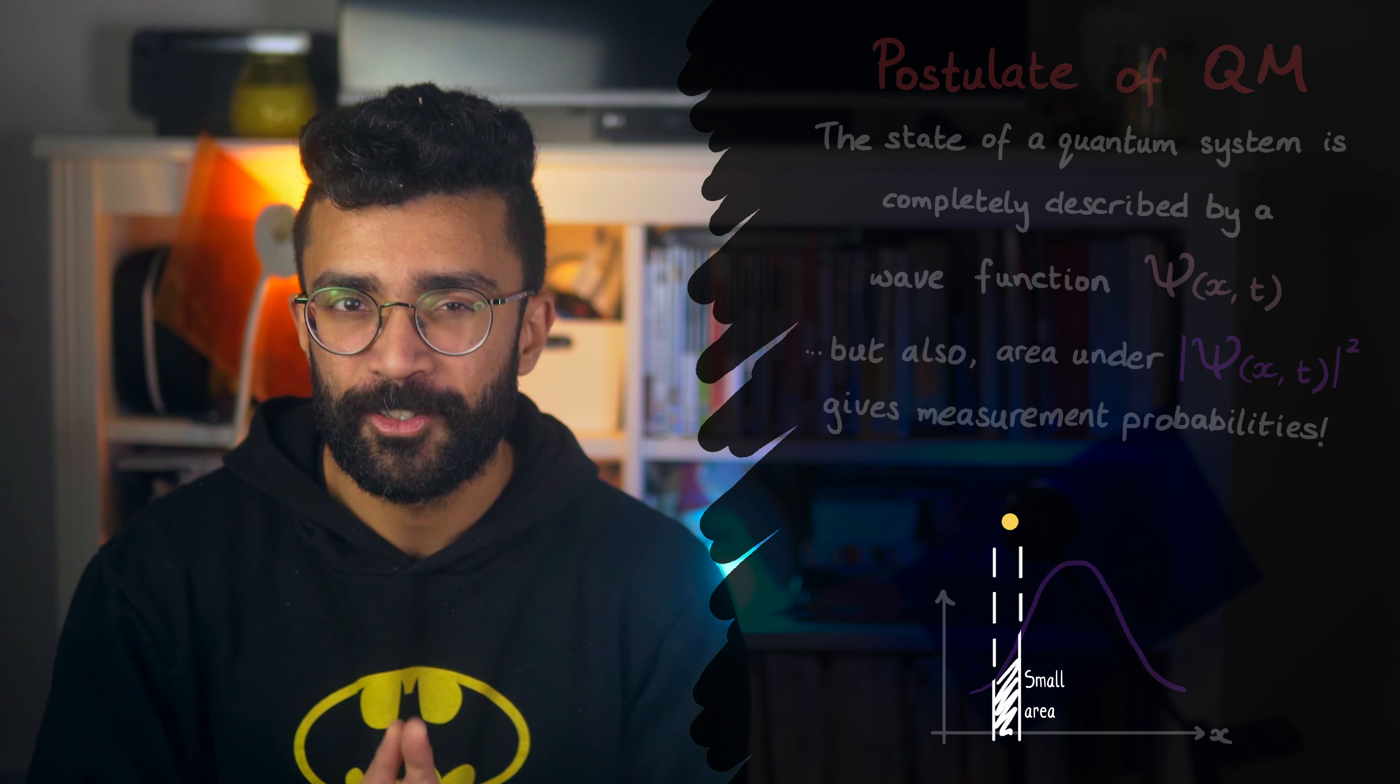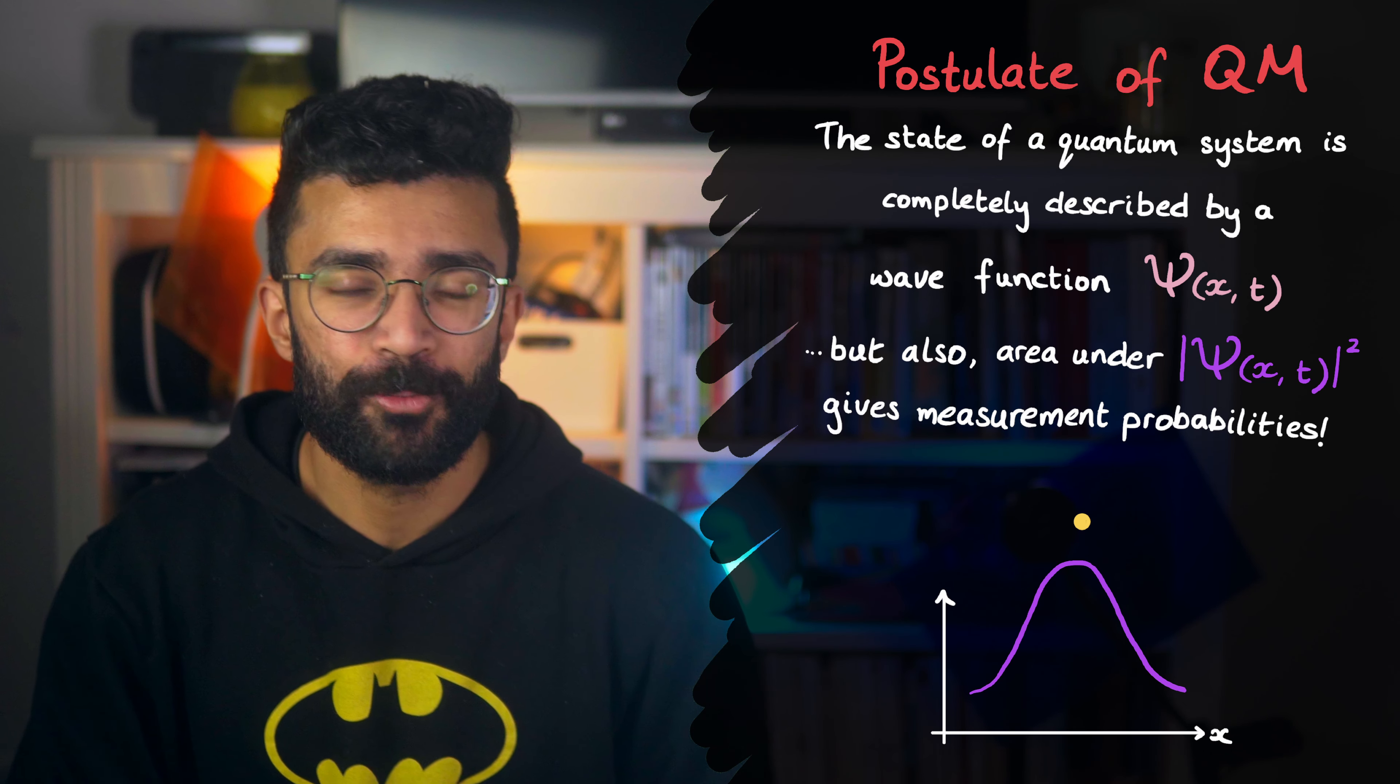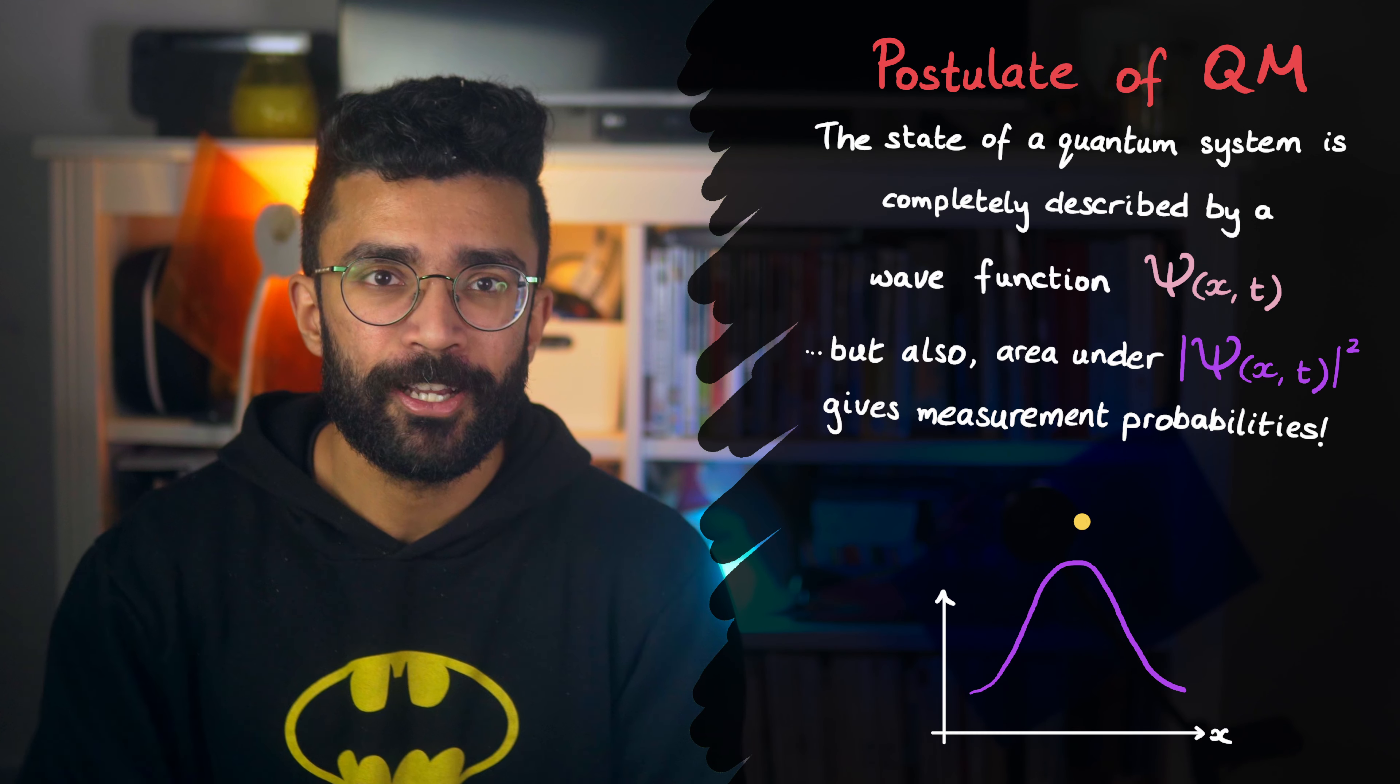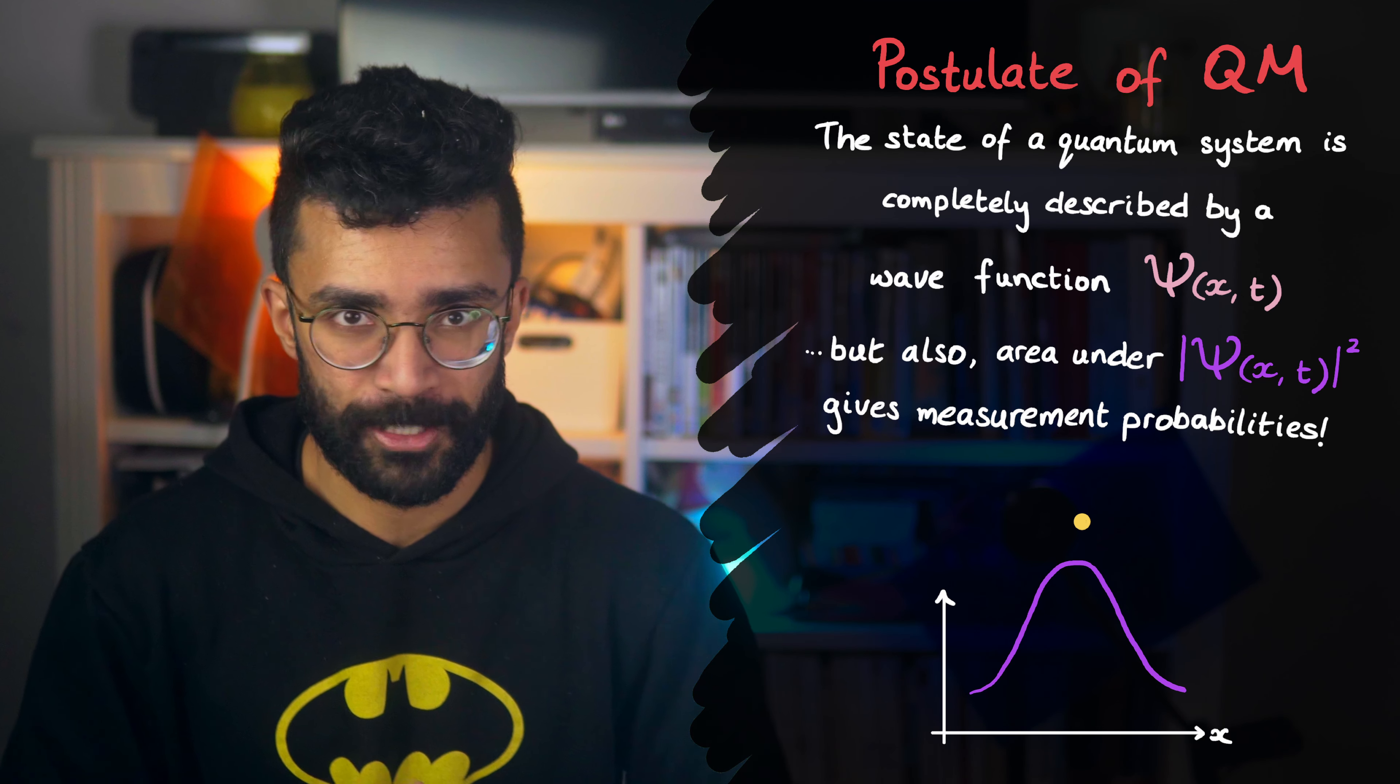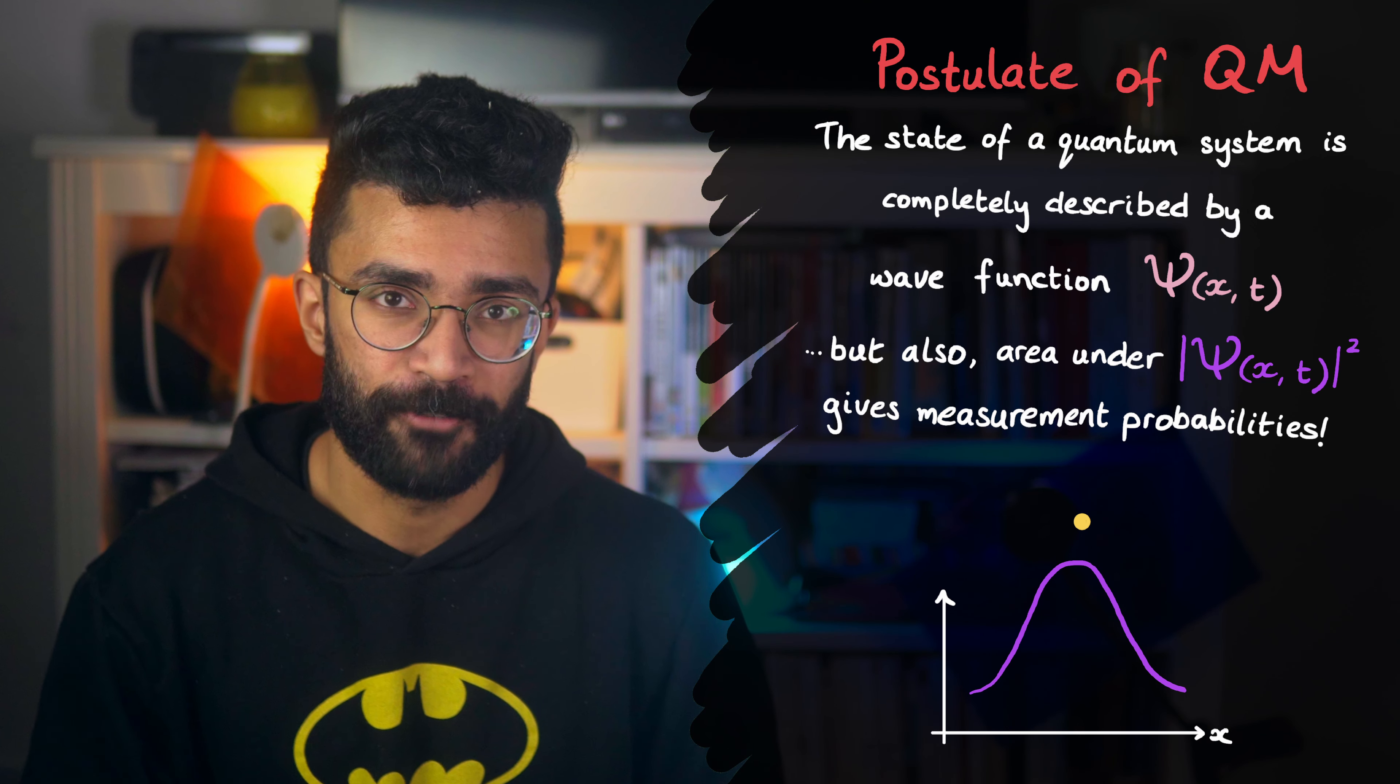So why is this true? Well, that's the postulate, we assume that it's true. And we assume it's true because the math really does work out that way. If we calculate the wave function for a particular system, the area under the square modulus of the wave function really does happen to correspond to the probability of finding our particle in that region of space. Every experiment we've ever done on this has confirmed it.